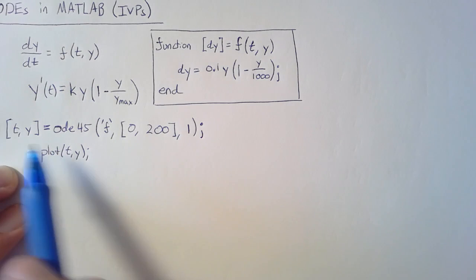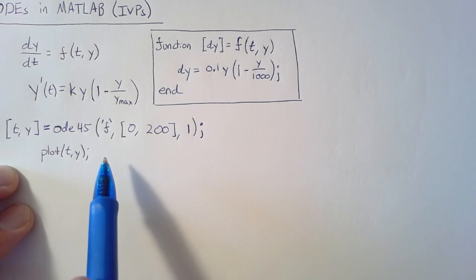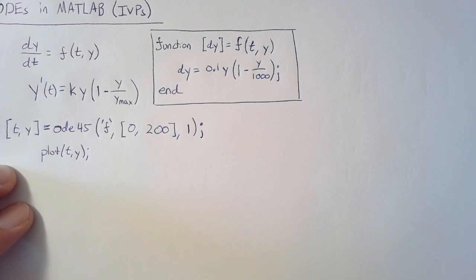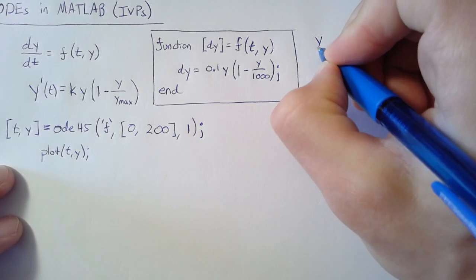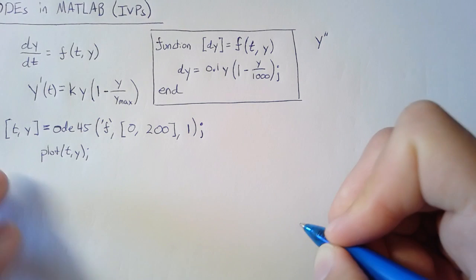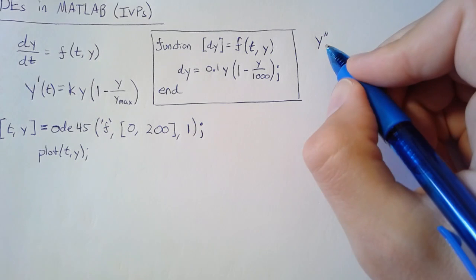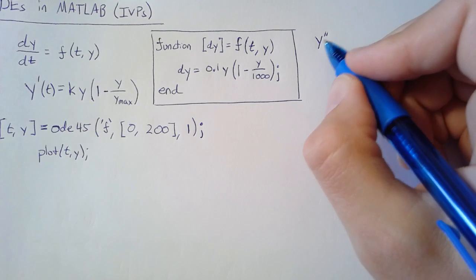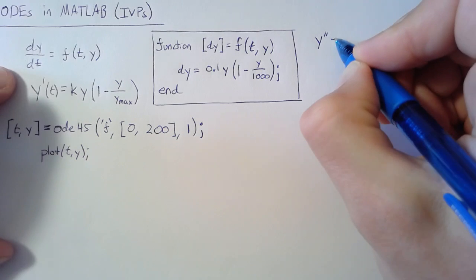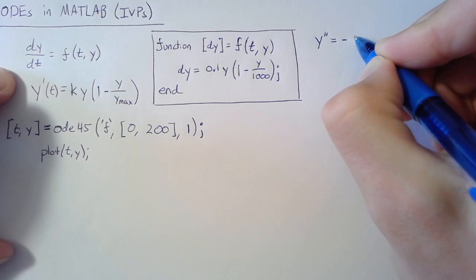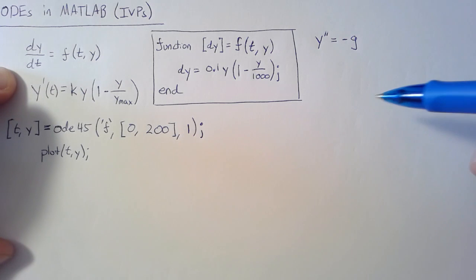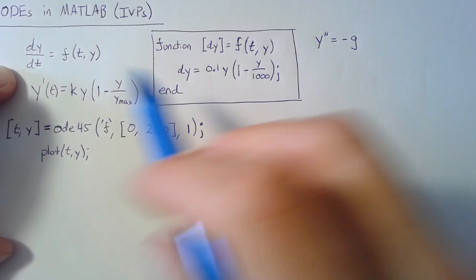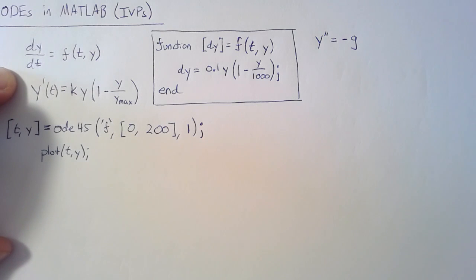Alright, so this is a very simple idea of what's going on. Let's make it a little more complicated by looking at ballistics. In ballistics, the acceleration of our ball is going to be equal to negative g - the acceleration due to gravity in the negative direction. This is different because now we have a second order differential equation.